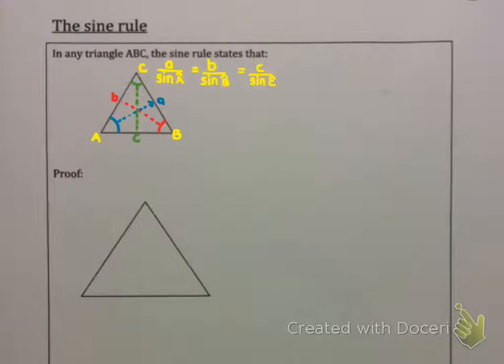Now that's one way to write the sine rule. Another way to write the sine rule is to flip it over. So, sine angle A over the side opposite it is the same as sine angle B over b, which is the same as sine angle C over c.